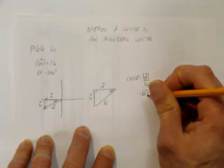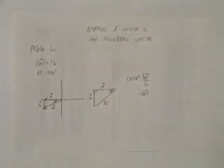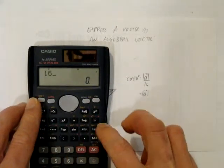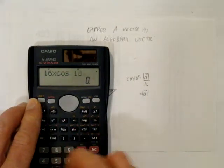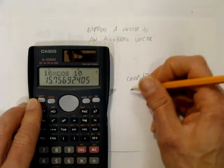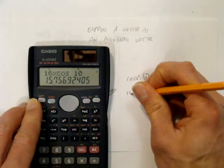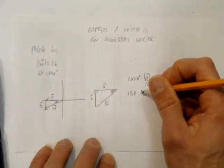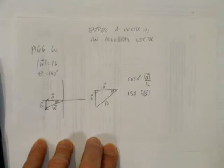So vector a's magnitude is just going to be 16 times cosine of 10. Make sure my calculator is in degrees. And I get 15. We'll round to one decimal place. 15.8 approximately. No units given, so we're okay with that.